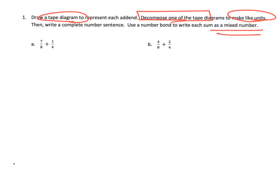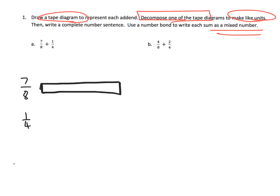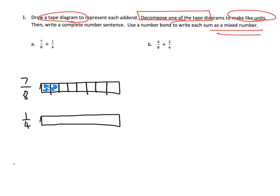Let's do problem A. We've got seven eighths and one fourth, and we're supposed to be using tape diagrams. We're going to draw seven eighths and one fourth, and we need to draw the exact same tape diagram for both. There are our two tape diagrams. First let's do seven eighths — I'm going to cut that into eight pieces because that's what the denominator says, and then shade in seven of them. Then let's cut this one into fourths.